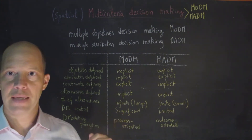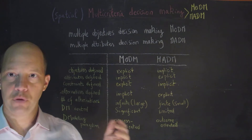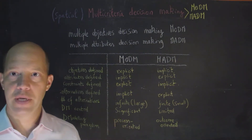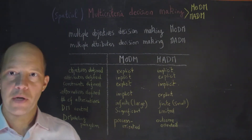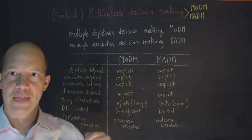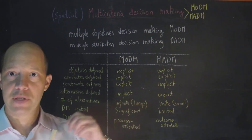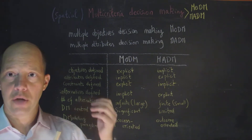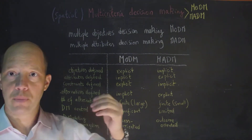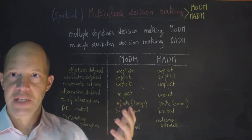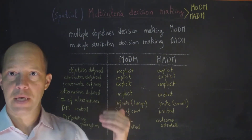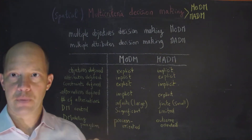Multiple objective is slightly different, and we have talked about this especially in reserve design, where one objective might be to maximize biodiversity while the other objective might be to minimize the cost. Some of these objectives could, of course, be set into constraints, as we have seen earlier.